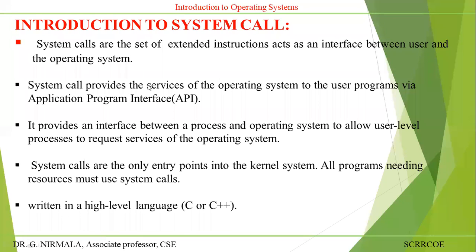That interface is called as API — application program interface. For example, consider Java: it has Java API, that is the JVM, Java Virtual Machine. Consider Windows operating system — they have an API called Win32 API, which is the application program interface.